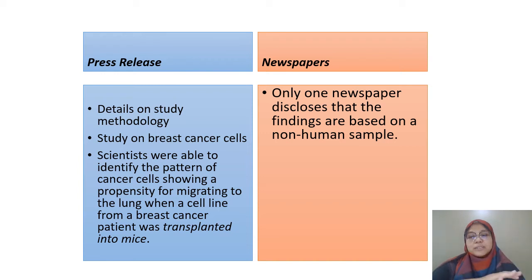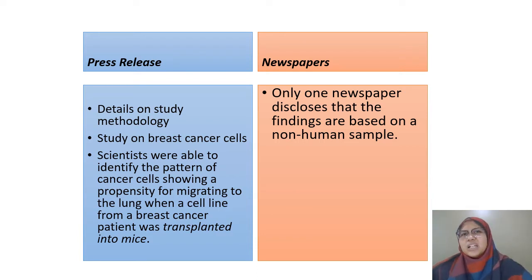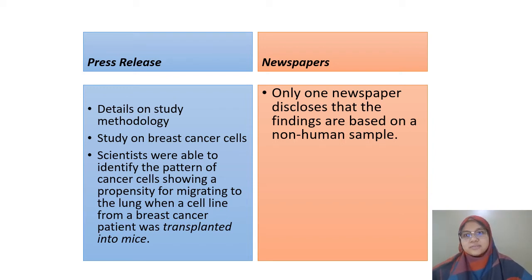Most science stories in newspapers or media usually don't tell you whether the study is in vitro, in vivo, or based on human samples. In vitro refers to outside a living organism, while in vivo is within the organism. That's one of the key shortcomings in science reporting — they usually don't specify what the subject of the study is. Because of that, this often leads to a lot of confusion and misunderstanding about certain studies.